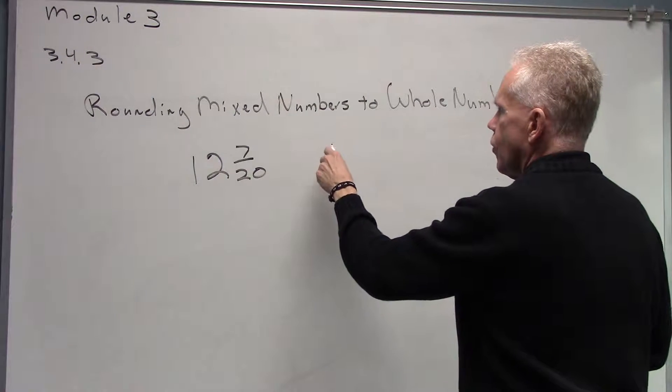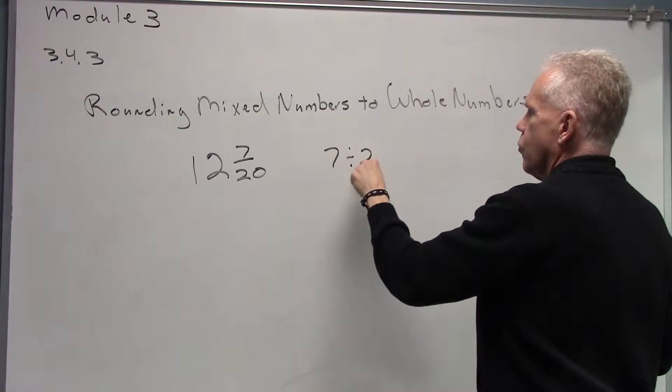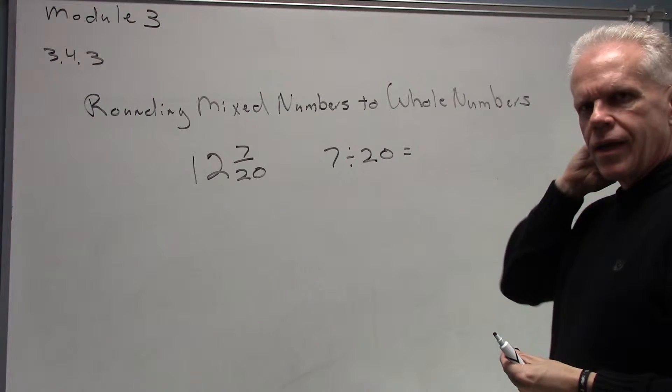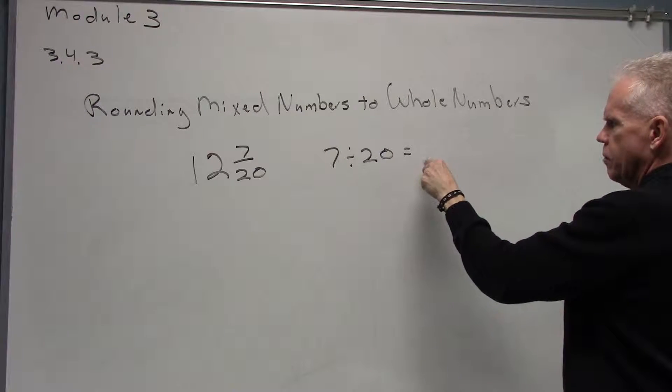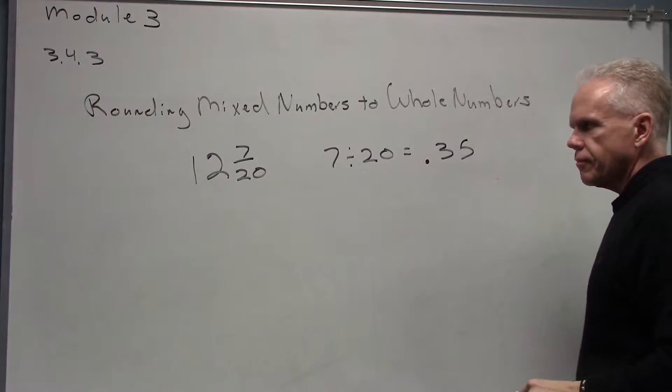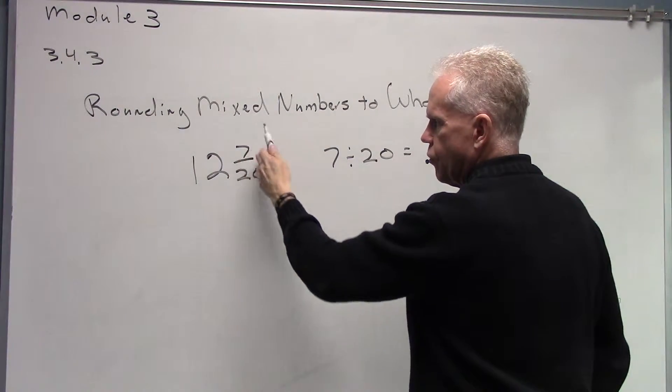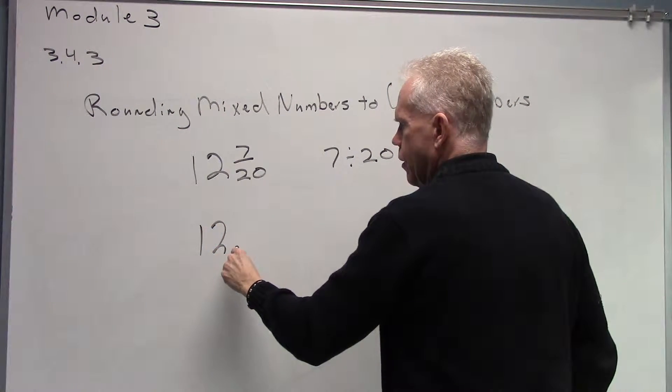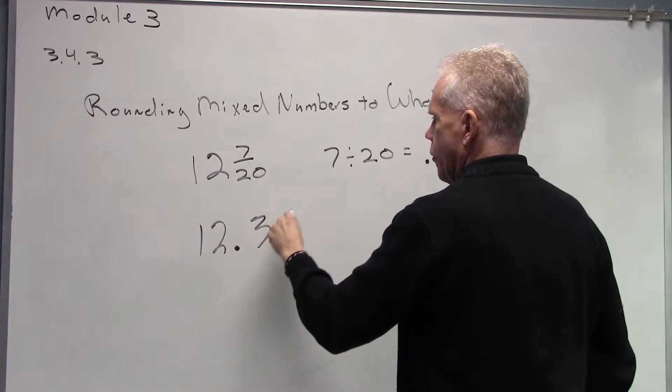I hope what you did is you started off by doing 7 divided by 20. 7 divided by 20, let's see, I believe that's going to be a .35. So what we'll do then is we'll say 12 and 7 twentieths becomes 12.35.